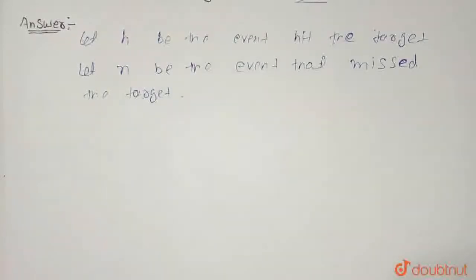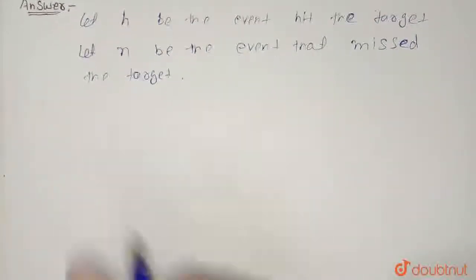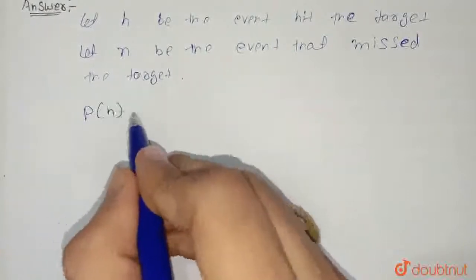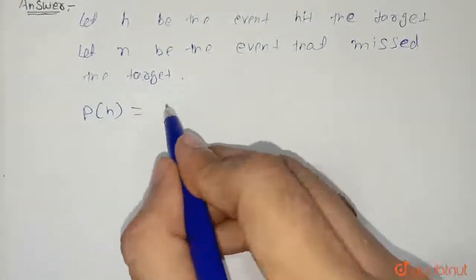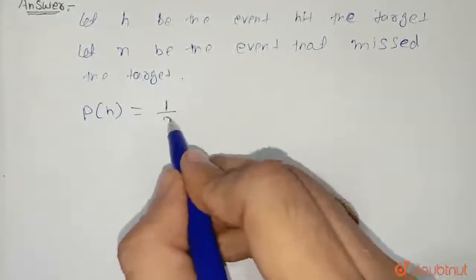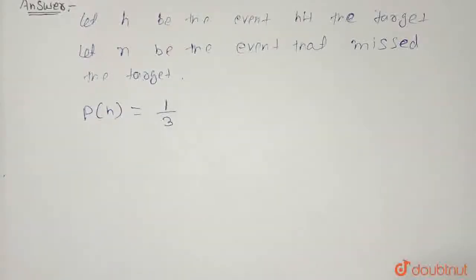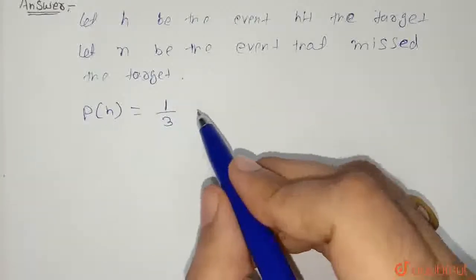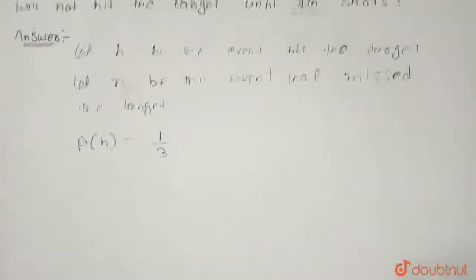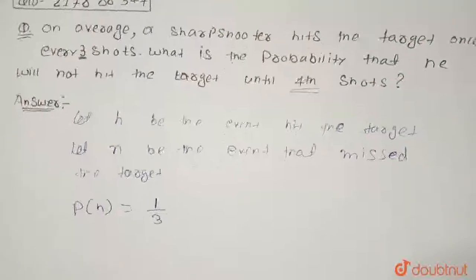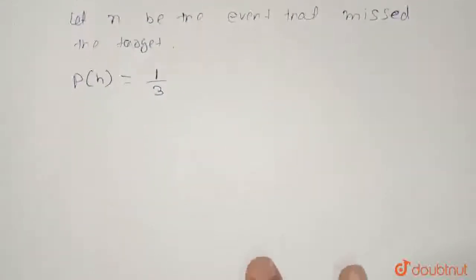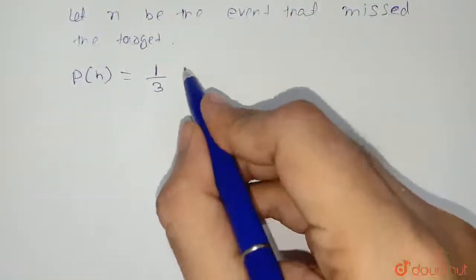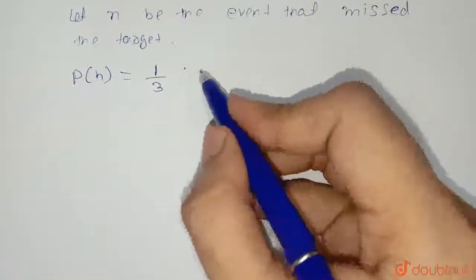Probability of event that hits the target will be 1 upon 3, as it is given in the question that the sharpshooter hits the target once every third shot.